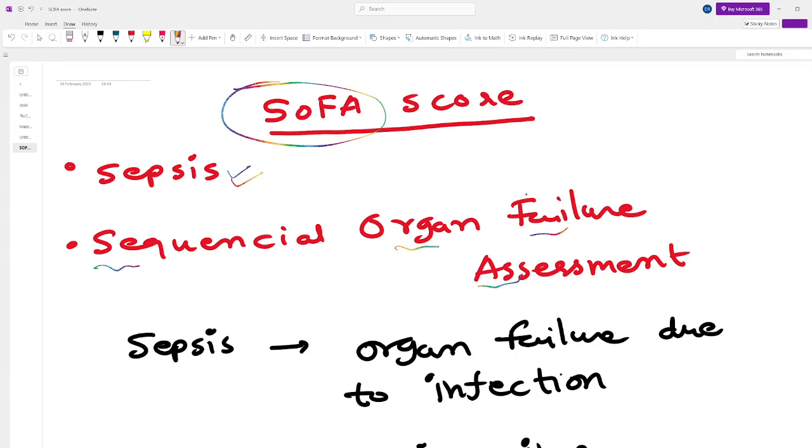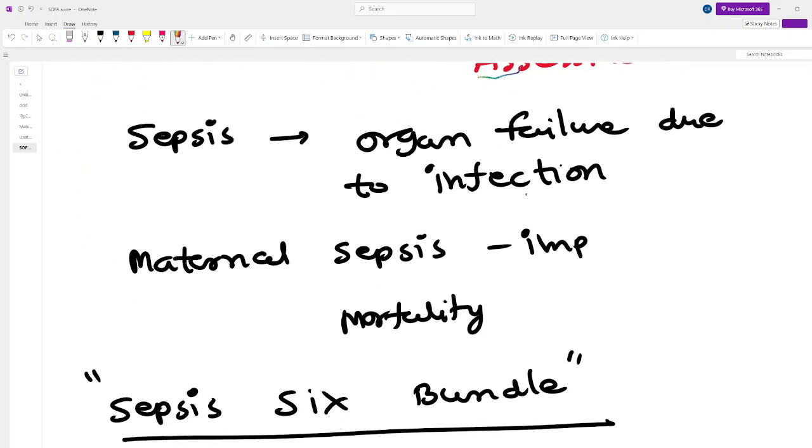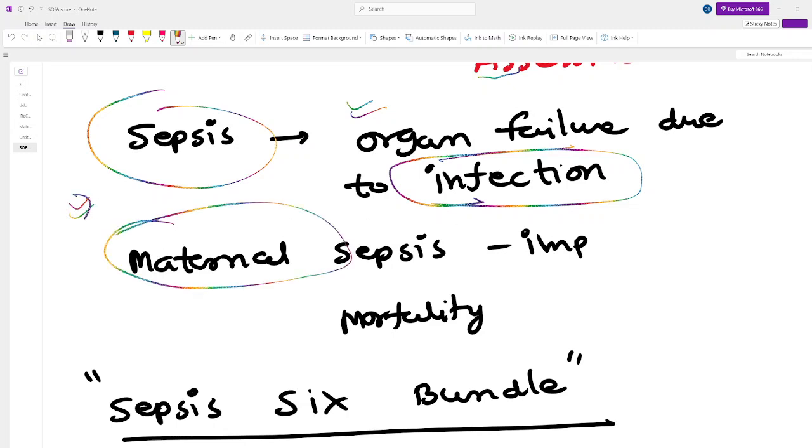The full name is Sequential Organ Failure Assessment. What is sepsis? Sepsis is multiple degrees of organ failure due to infection. It's a very important problem in the maternity side because it is a reason for maternal mortality.